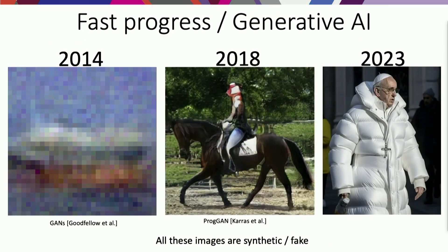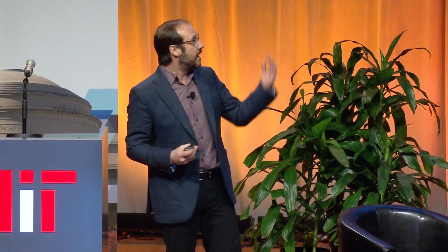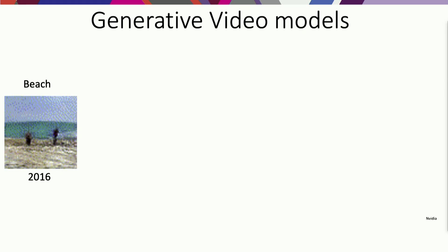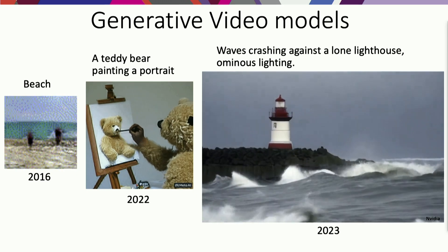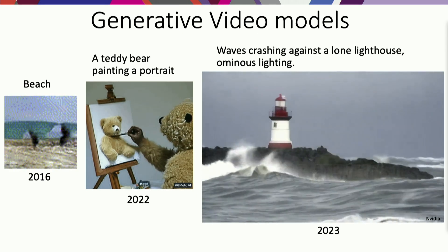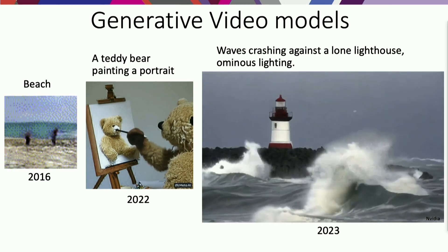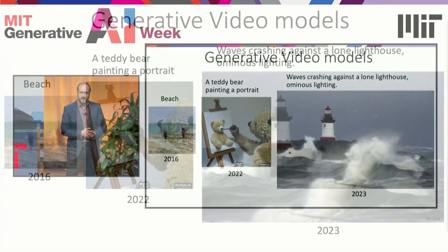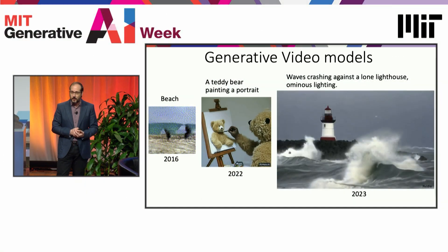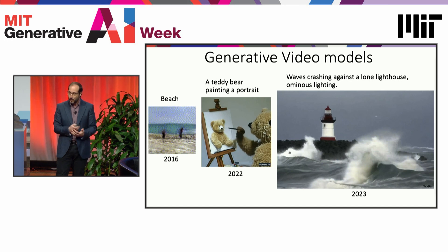Not even a decade later, you have models capable of rendering things that look very, very real, and yet they are not real. The same amount of progress has been happening in models of video. In 2016, in my group, we developed a model for video generation that would generate images like two people walking on a beach — though it was hard to tell. Just a few years later, there are models of video generation that work much better and render videos that look very realistic, though there is still a lot of progress that needs to be made.